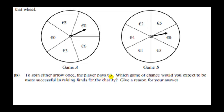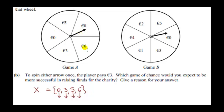To spin either arrow once, the player pays three euros. Which game of chance would you expect to be more successful in raising funds for the charity? Let's start with Game A. Let X be the random variable that the arrow lands on zero, three, five, or six — those are the only four possibilities. Zero appears twice out of five equally likely sectors, so P(X=0) = 2/5. For three, five, and six, each appears once, so each has probability 1/5.